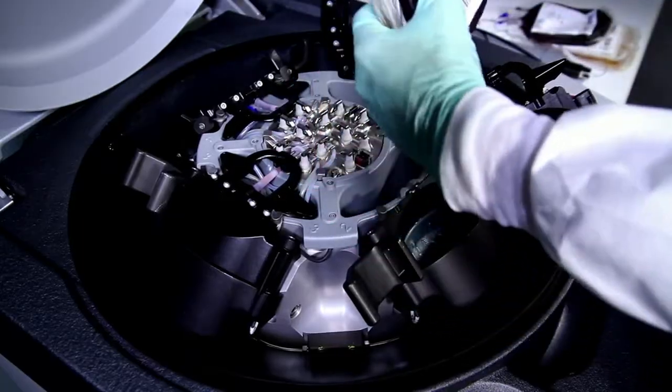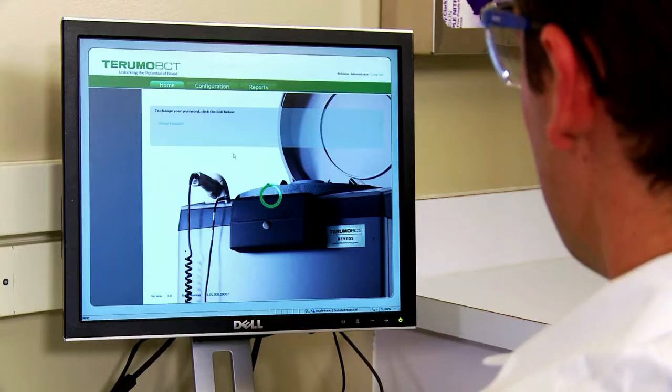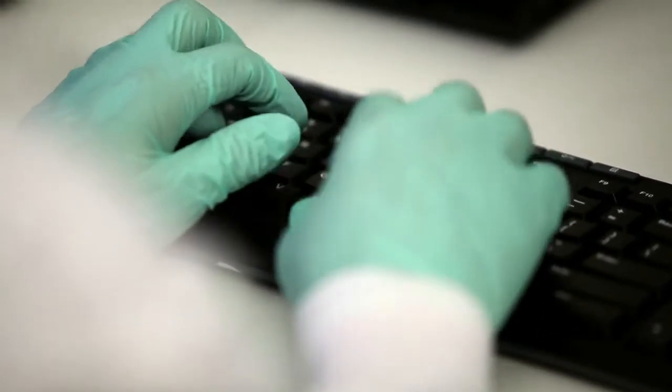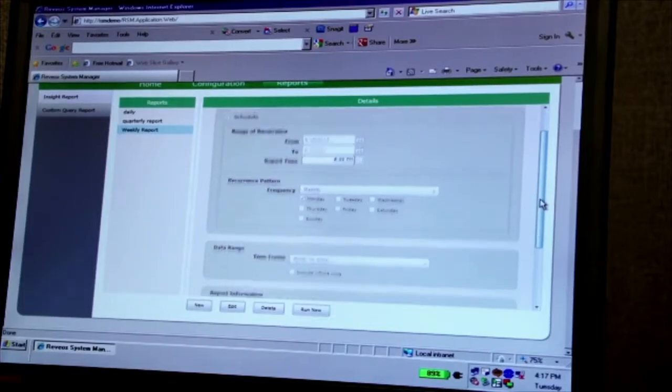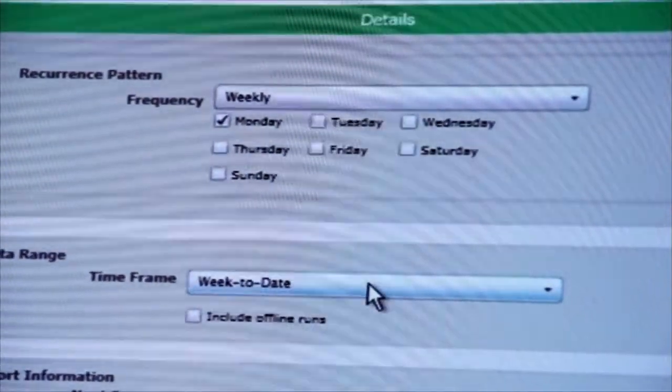The operator removes the bags from the device and all run data is transferred to Revios System Manager. Data transferred to Revios System Manager includes barcode information, product data, total run time, loading time and unloading time, sealing status and other key information.